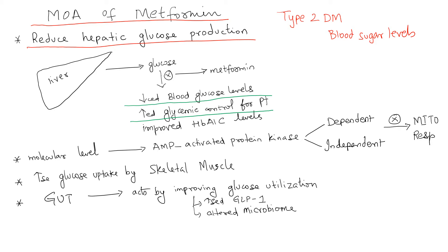That sudden spike in blood sugar levels after a meal can be avoided. Ultimately, this leads to improved HbA1c levels for the patient. It is important that diabetic patients check their HbA1c levels and preferably maintain HbA1c less than or equal to 7. At the molecular level, metformin exerts its effect by acting upon AMP-activated protein kinases (AMPK).